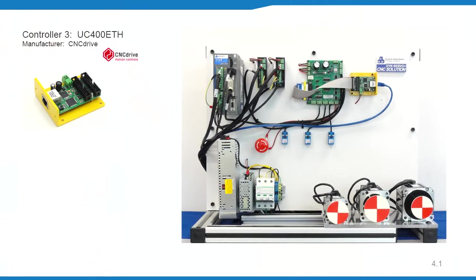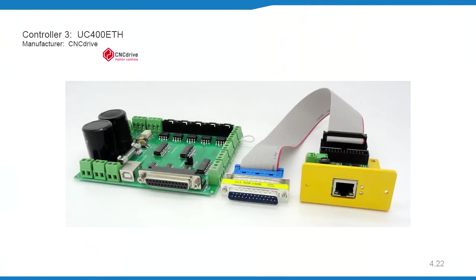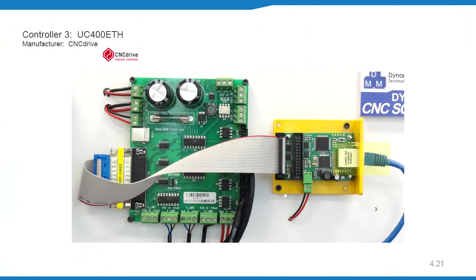The UC400ETH controller offers more performance than the UC100 and can also be connected directly to the DMB breakout board. The UC100 and UC400 are also compatible with UCCNC. Connect the DMB breakout board to the UC400 port 1 using an LPH26 to male DB25 cable. Connect the UC400 to the PC using an ethernet cable. Connect the 24V power supply to the UC400.